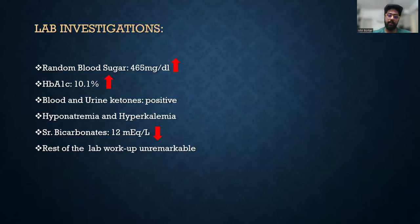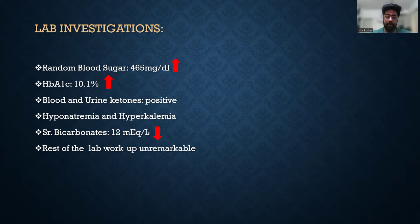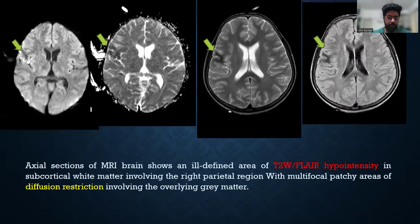Lab investigations showed random blood sugar was raised, HbA1c was raised, blood and urine ketones were positive. The patient had hyponatremia and hypokalemia, serum bicarbonates were low, and rest of the work was unremarkable — so basically the patient was in diabetic ketoacidosis. MRI brain showed an ill-defined area of T2 FLAIR hypointensity in subcortical white matter involving the right parietal region with multifocal patchy areas of diffusion restriction involving the overlying gray matter.